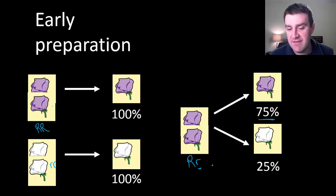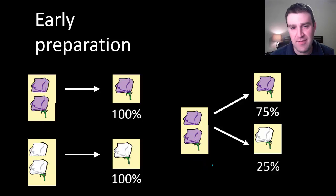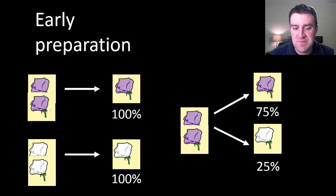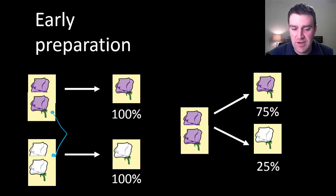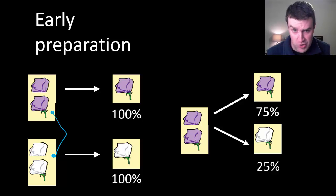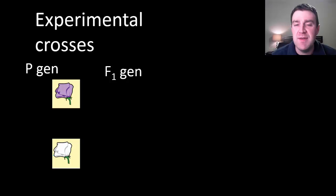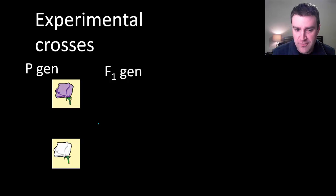Knowing he had pure breeds for purple, Mendel thought it would be interesting to cross them with pure breeds for white flower color — essentially asking: who wins? That was the experiment he ran next: what if you cross the pure breeds for purple and white?